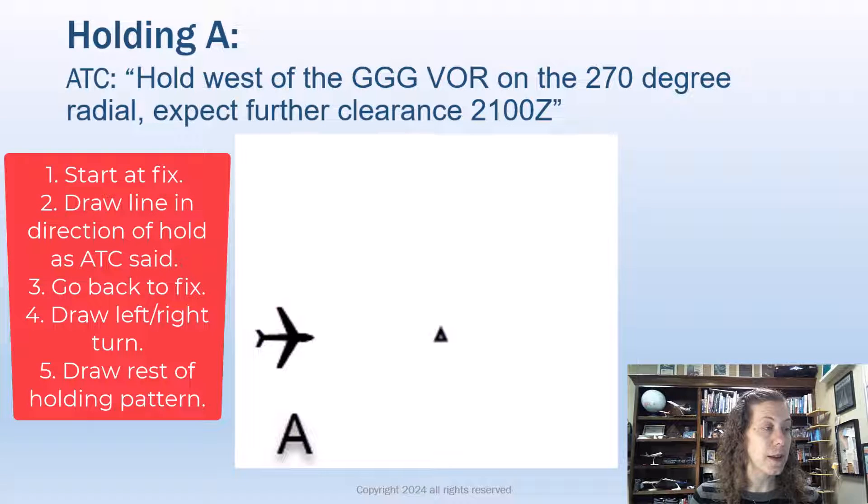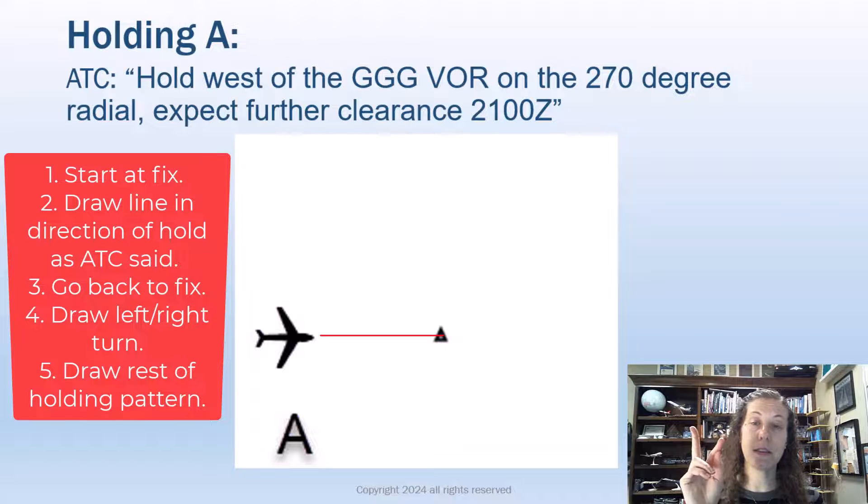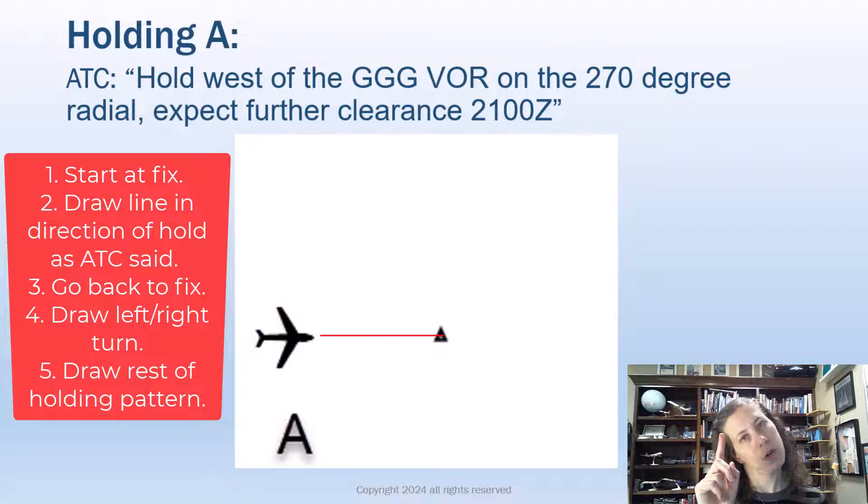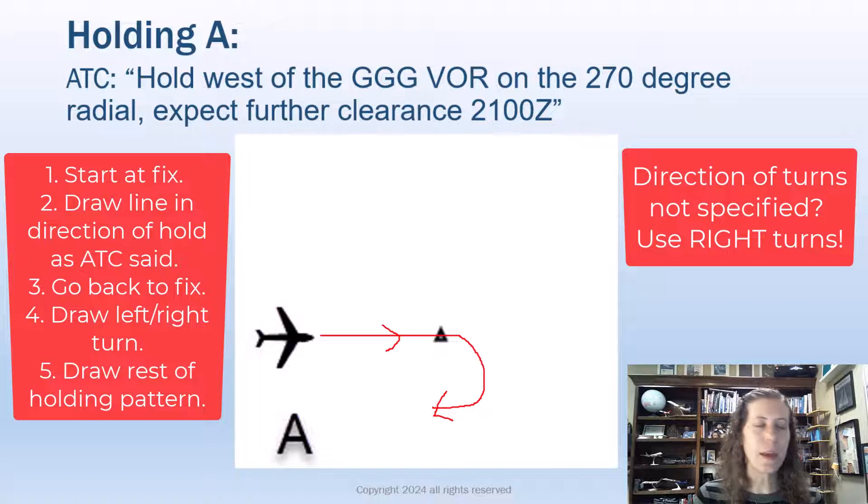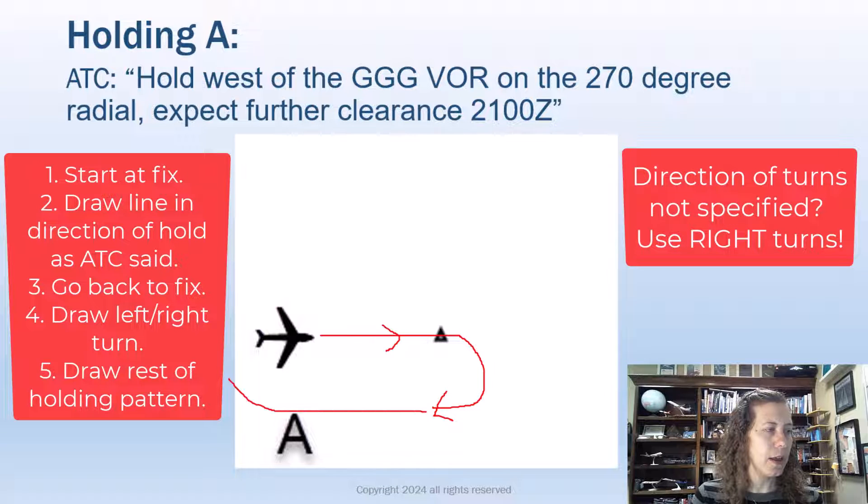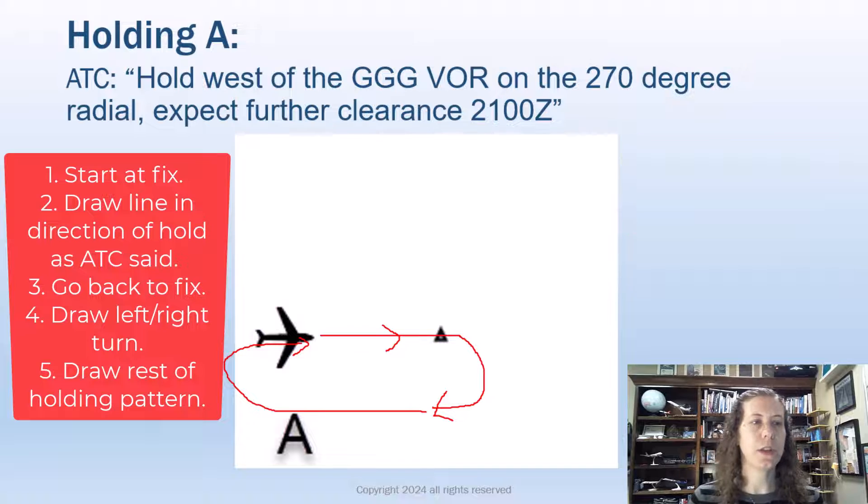We take the fix. We draw a line going the direction the holding pattern says. So this one they said hold west, so I draw a line going west. I go back to my fix and then I think, is it a right or a left turn? Since ATC did not specify, I know a standard holding pattern is right turns. So at the fix I'm going to make a right-hand turn like so, and now I can draw the rest of the holding pattern there. I could label that fix GGG if I wanted to. All right, so there is my holding pattern.